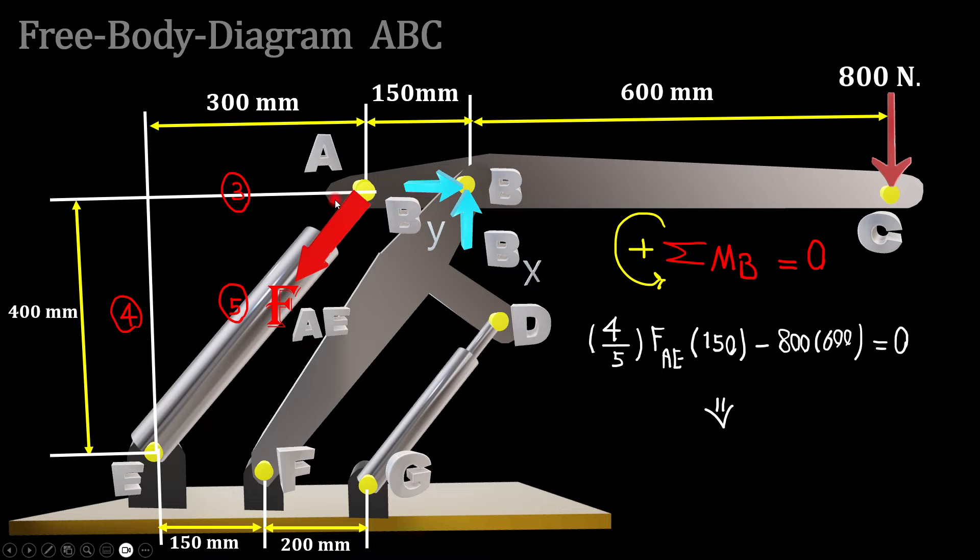The vertical component is 4 over 5 FAE times 150, which is the distance between A and B, then minus 800 Newtons times 600 millimeters goes to zero, because those are the only two forces applying moment about point B.